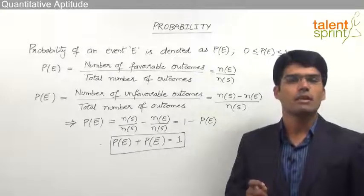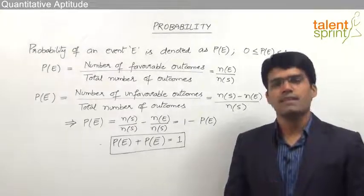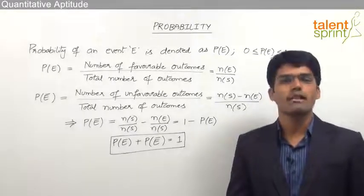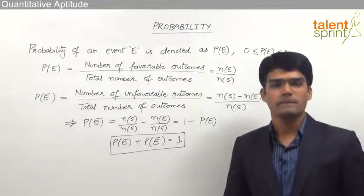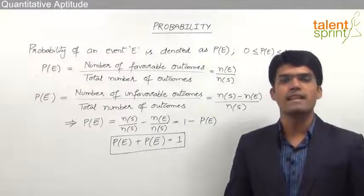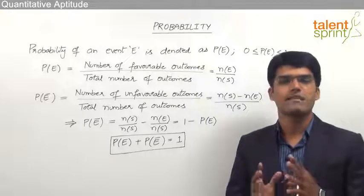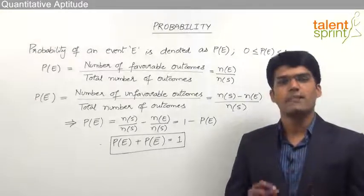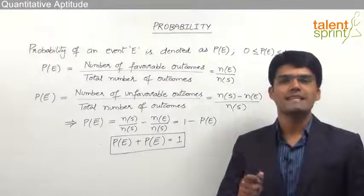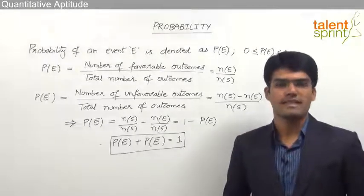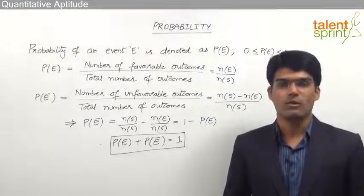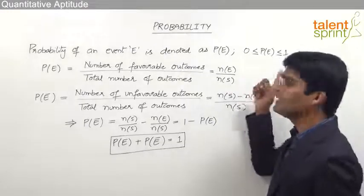For an event which is impossible to happen the probability is 0, and for an event which will definitely happen the probability is 1. For example, if we have a biased coin which has got heads on both sides, the probability that the outcome is head is 1 — that is the maximum probability. And for such a coin the probability that the outcome is tails is 0, because tails cannot appear for a coin which has got heads on both sides. So probability for a definite event is 1 and for an impossible event is 0.